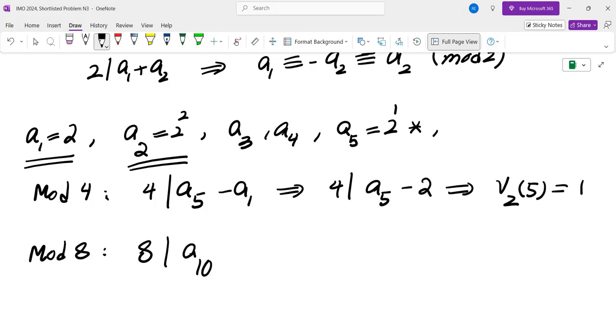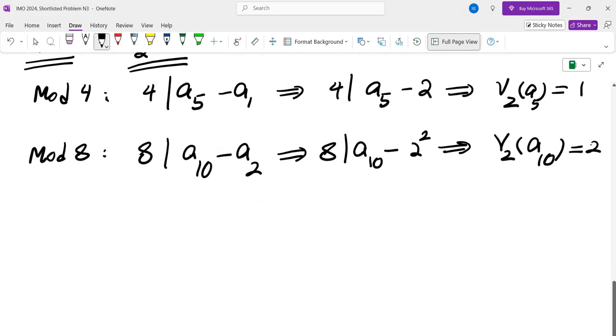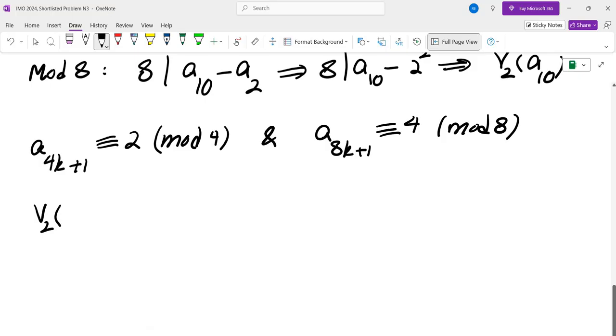So what if I take mod 8? 8 divides A10 minus A2, which means 8 divides A10 minus 2 squared. So in other words, V2 of A10 is in fact 2. And I can do the same thing for anything that is a multiple of 4 plus 1. So in other words, A4K plus 1 is 2 mod 4. And A8K plus 1 is 4 mod 8, which means V2 of A4K plus 1 is 1. And V2 of A8K plus 1 is in fact 2.